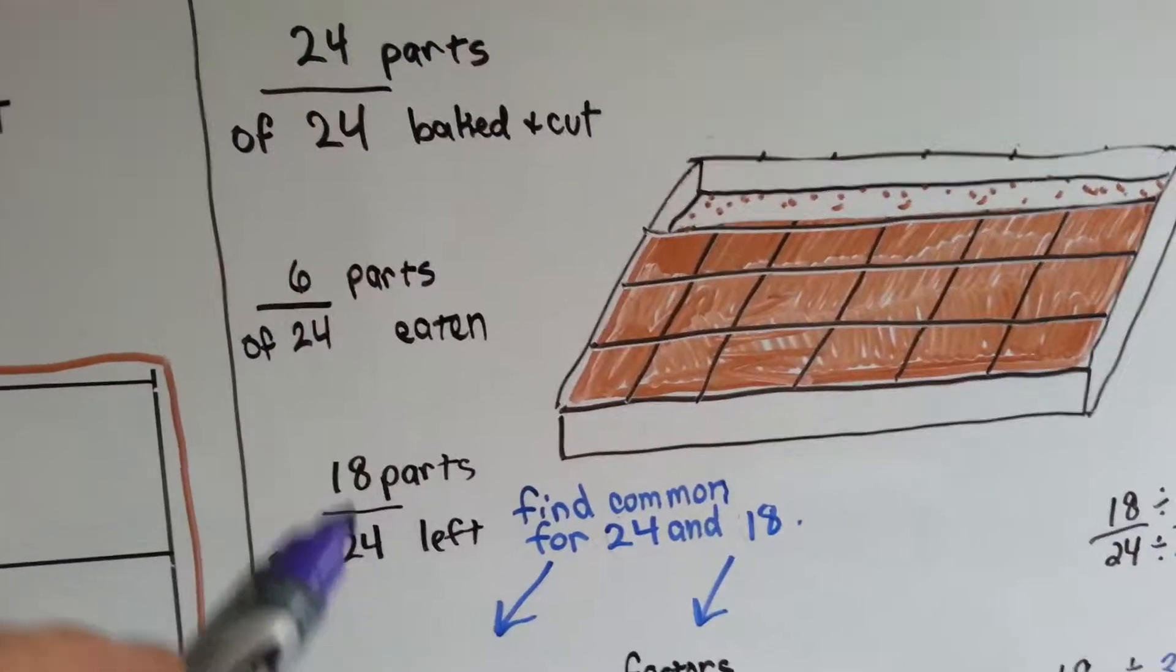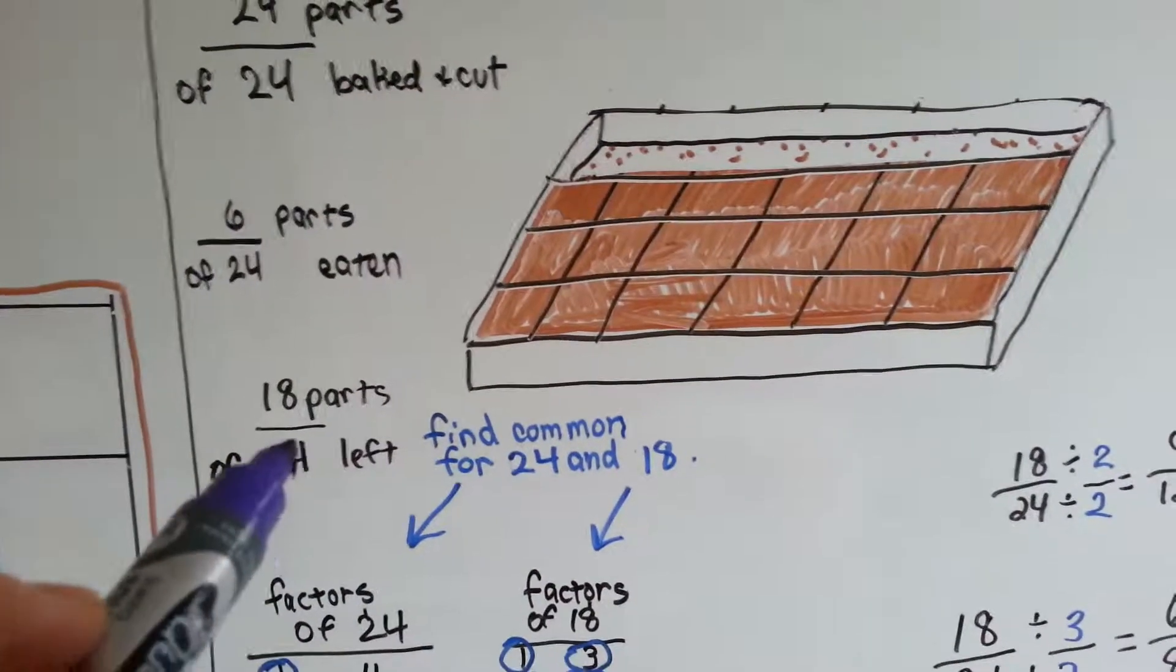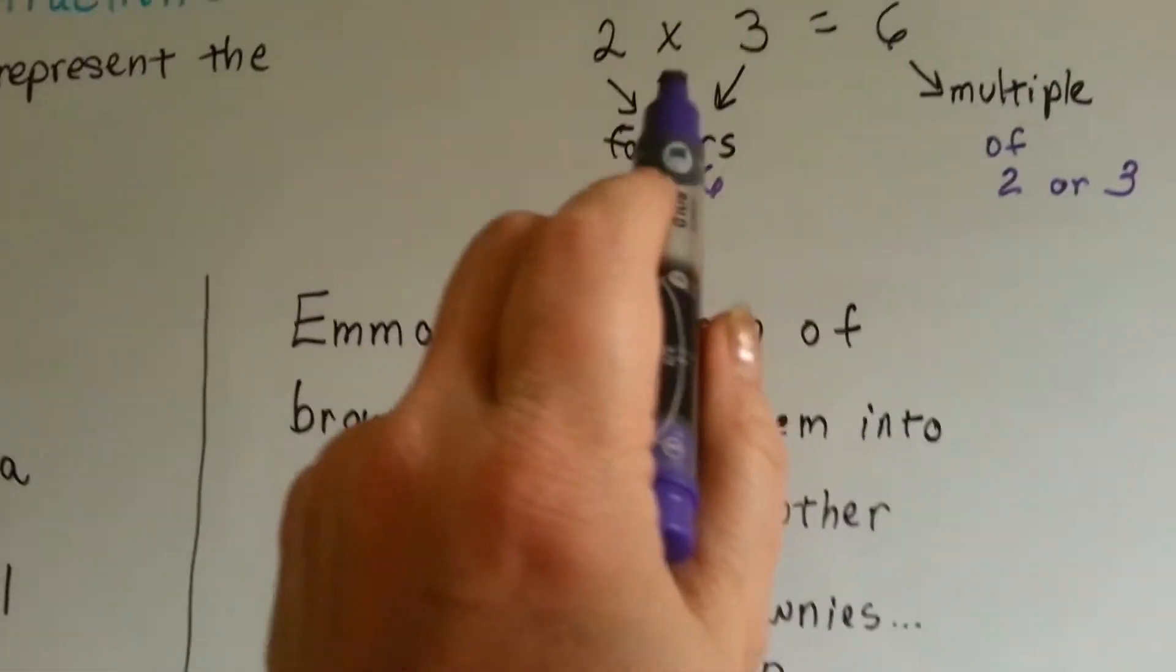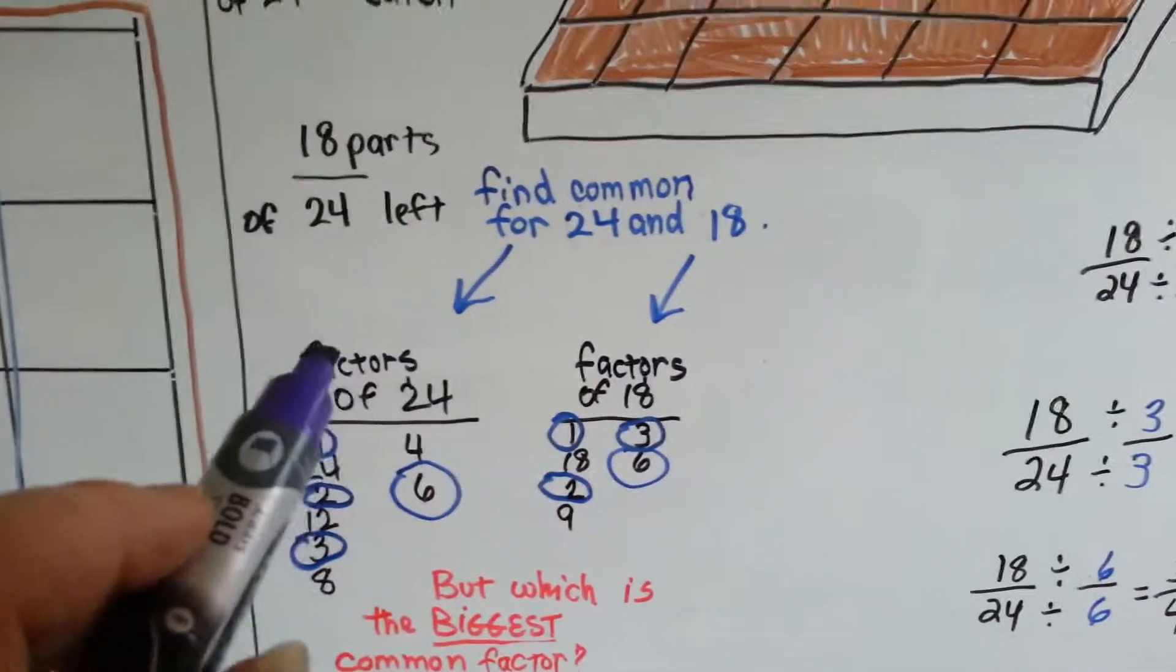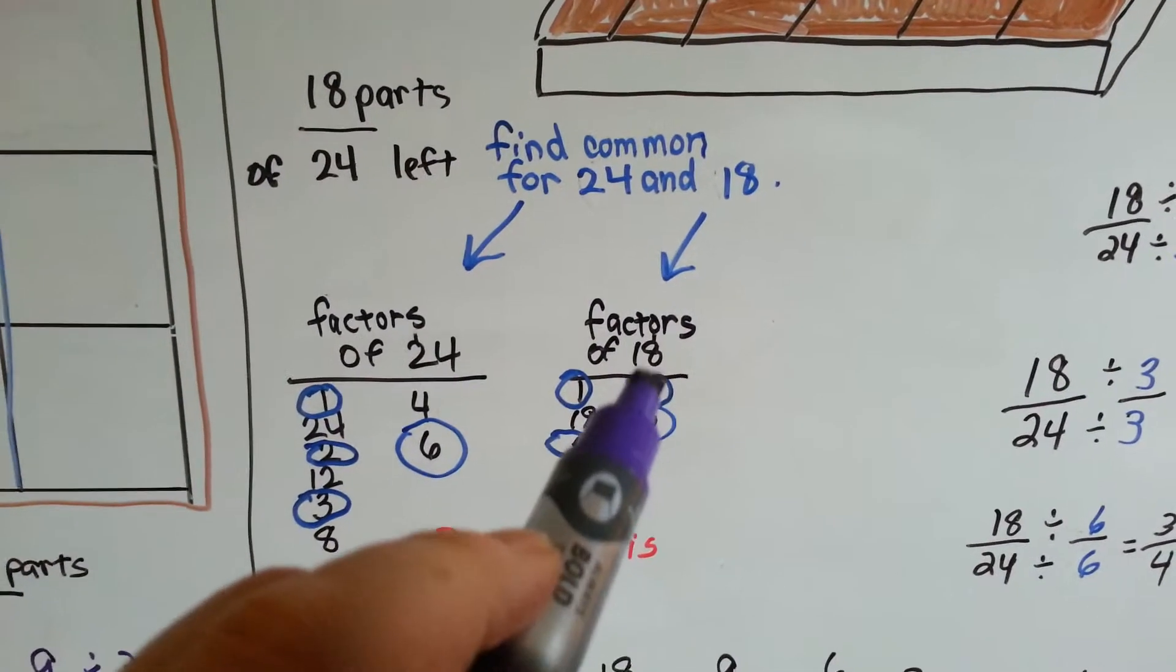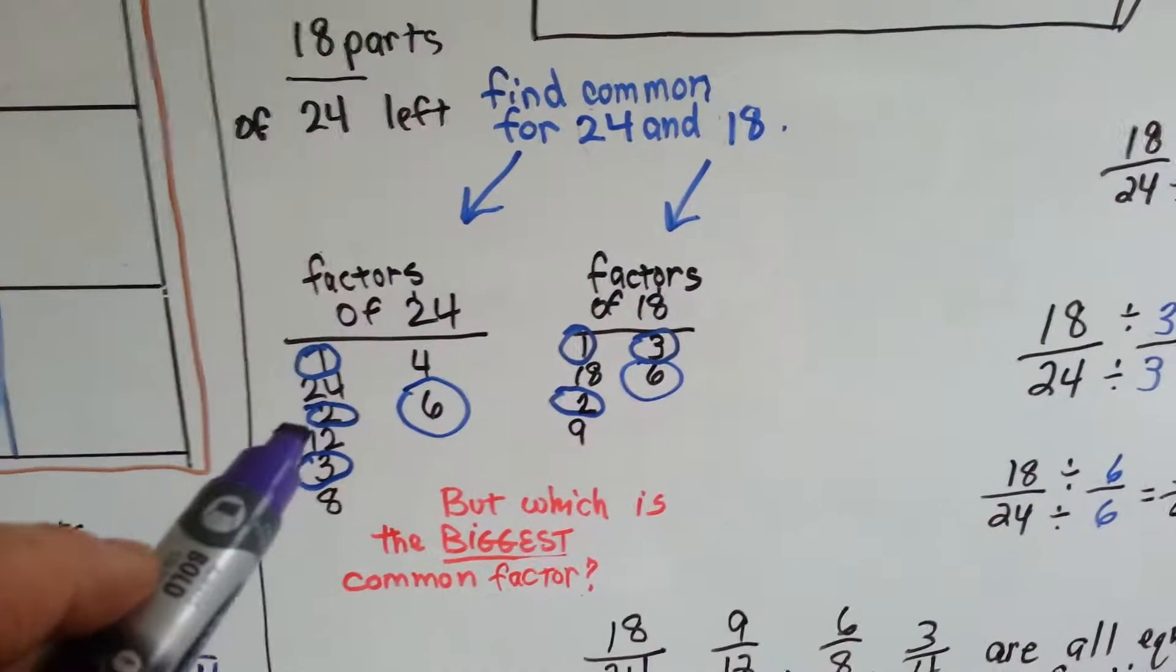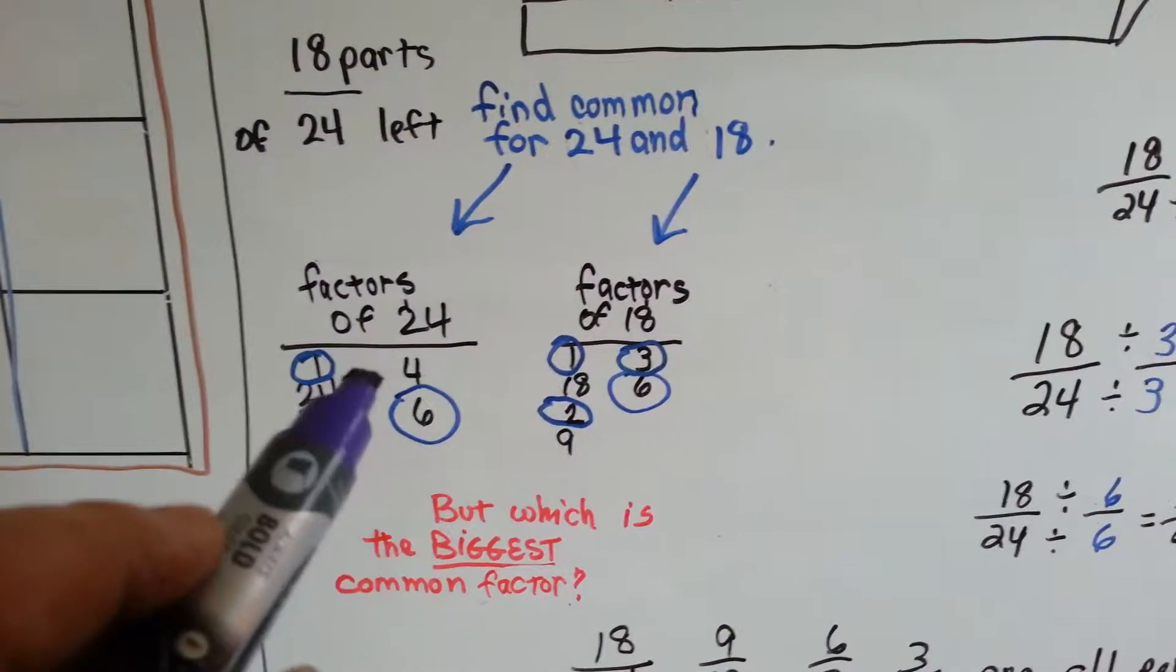Now, this can be reduced because this is even and this is even and they're kind of big. So how to simplify or reduce them? We find what the common factors are for twenty-four and eighteen. What can we multiply together to get twenty-four and what can we multiply together to get eighteen? One times twenty-four, two times twelve, three times eight, and four times six. Those are the factors for twenty-four.